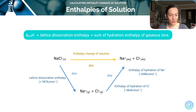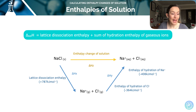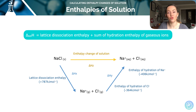To summarise: the enthalpy change of solution, or delta H Z as we've abbreviated it here, is equal to the lattice dissociation enthalpy plus the sum of the hydration enthalpies of both of the gaseous ions.